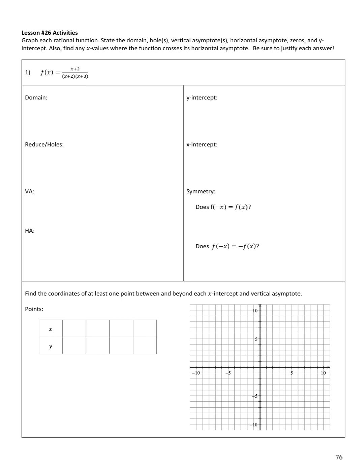The domain is all real numbers except for any x value that would make the denominator 0. So I have to leave out negative 2 and negative 3. In interval notation: negative infinity to negative 3, union negative 3 to negative 2, union negative 2 to infinity. In set builder notation: the set of all x's such that x does not equal negative 3 or negative 2.